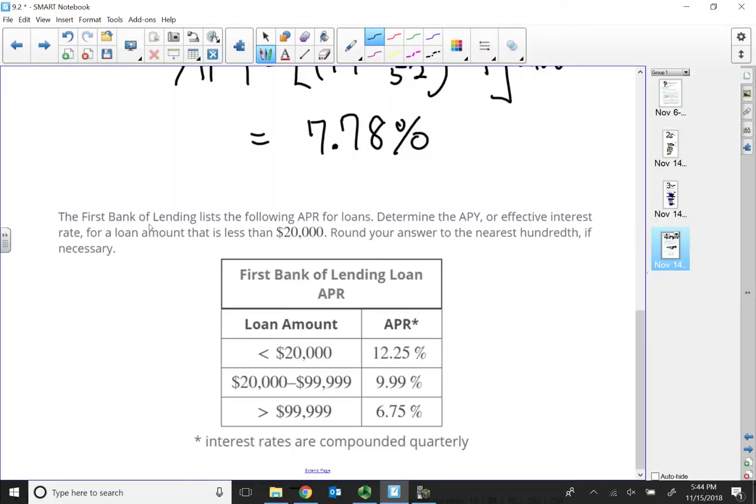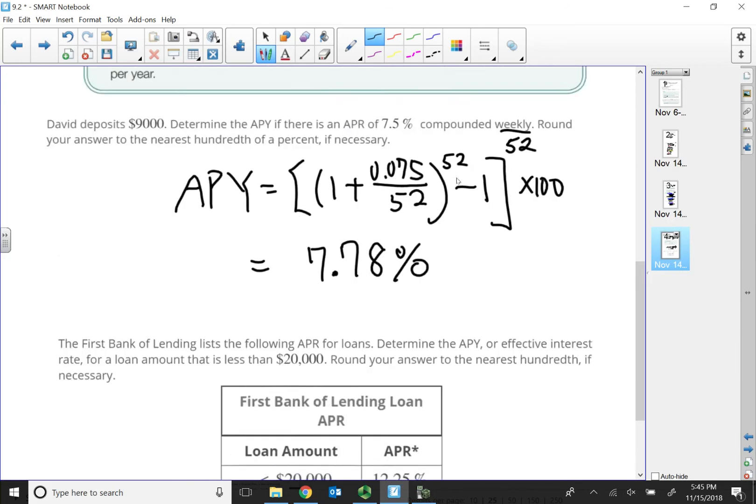So, let's take a look at this one. The first bank of lending lists the following APR for loans, determine the annual percentage yield or effective interest rate for a loan that is less than $20,000. So, at under $20,000, the APR is 12.25%. Interest rate is actually compounded quarterly.